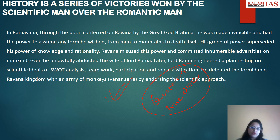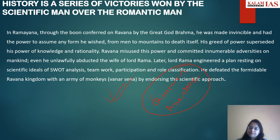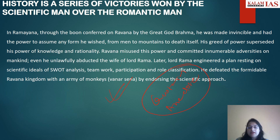This is a very common mistake seen in students. You can use the keywords of the given topic to justify the meaning of the anecdote and quotation. Here, I have taken an anecdote about Ramayana — Ravana was dealing with romanticism; he was made invincible, had the power to assume any form, and was therefore in the world of romanticism, believing he could defeat anybody.